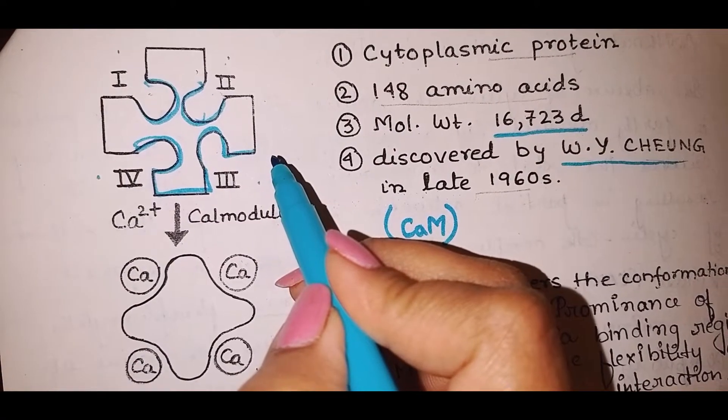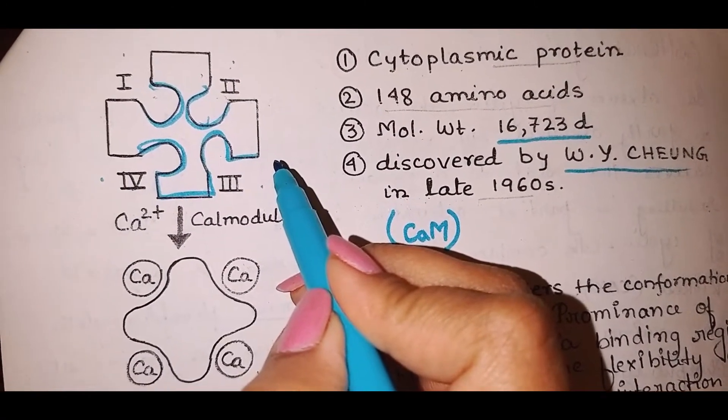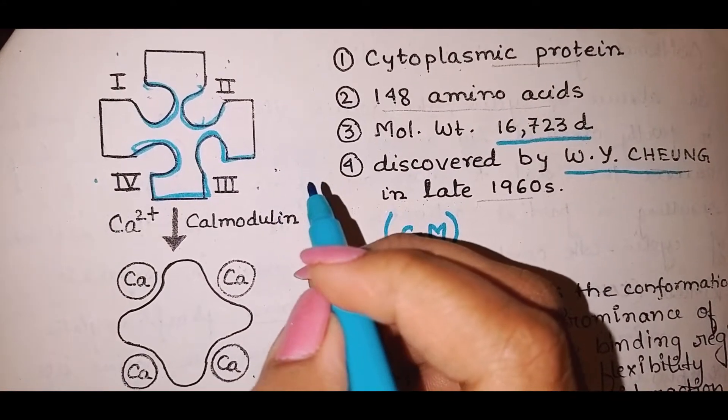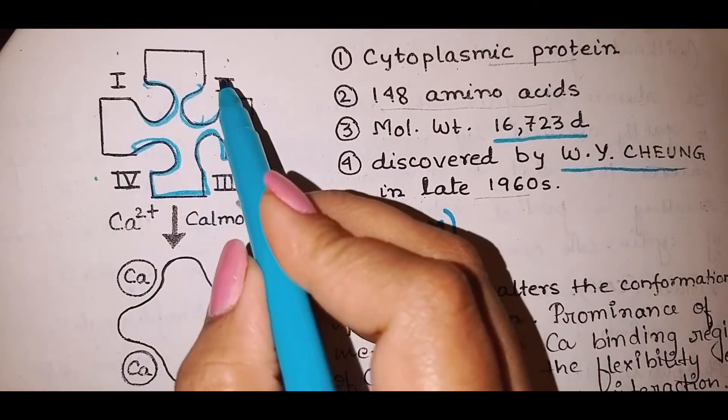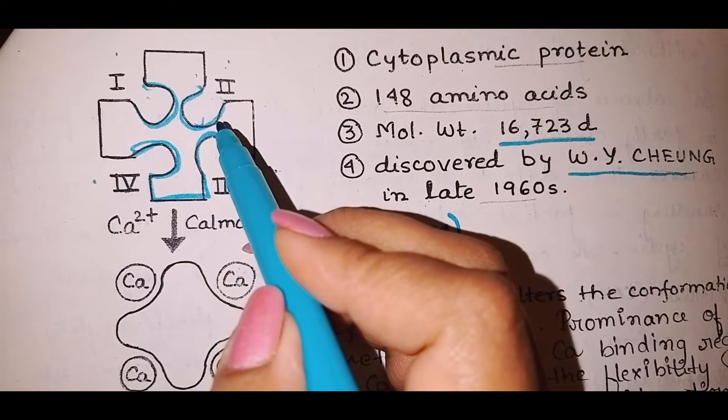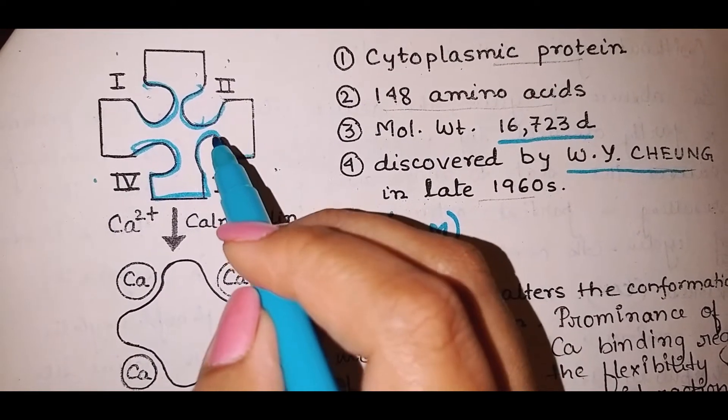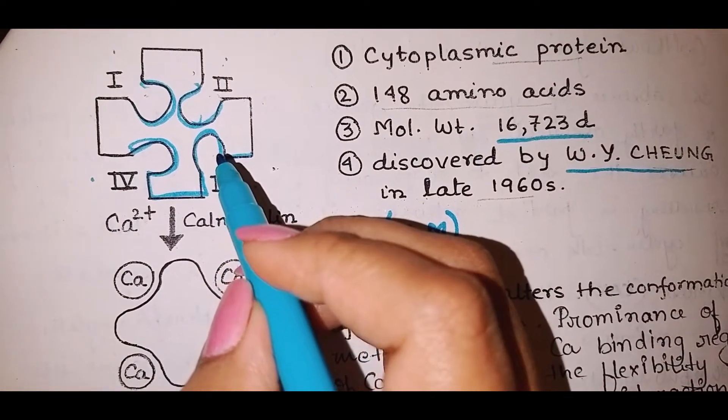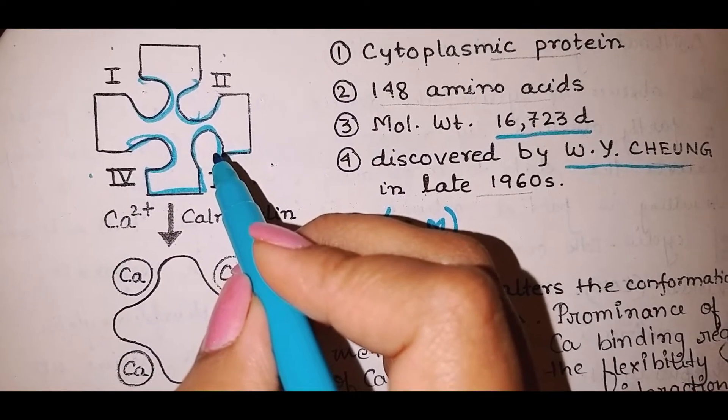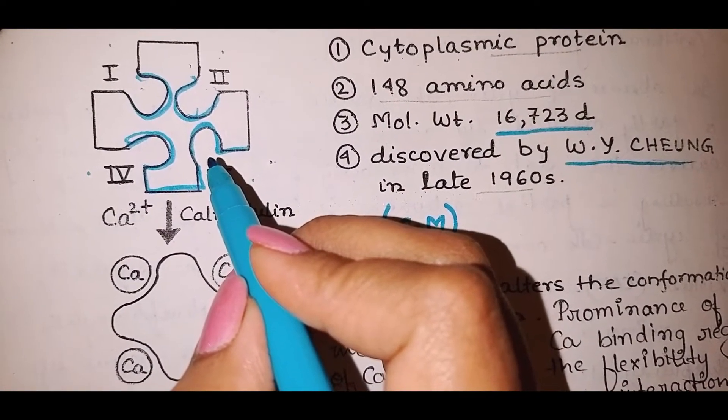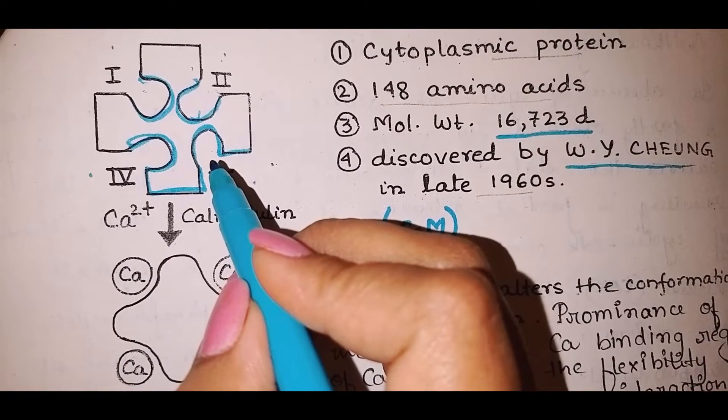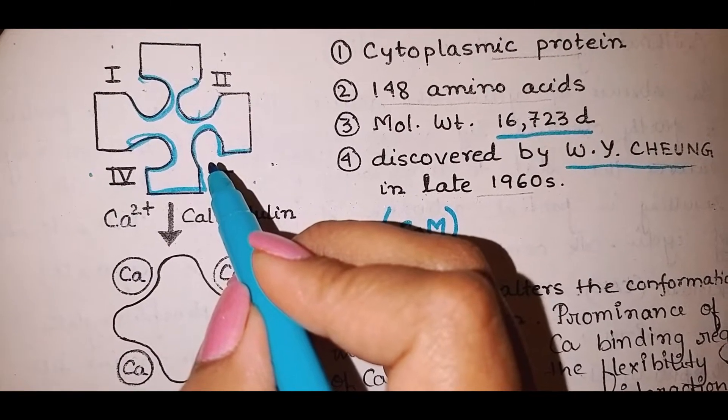This contains 12... these loops are specifically rich in aspartate and glutamate. Two helices are also found on either side of the loop, so it is termed helix-loop-helix protein.